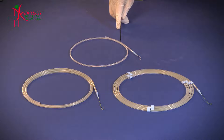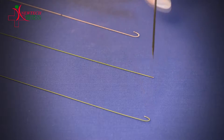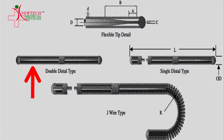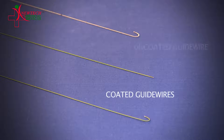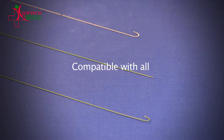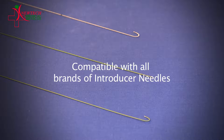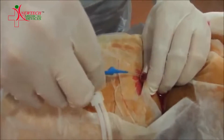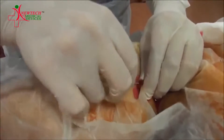The diameter of the guide wire can vary from 0.018 inches to 0.038 inches. This is a dialysis guide wire with a J-tip. We can also provide the same in straight tip, and in single and double distal form. A single distal guide wire is stiff at one end and flexible at the other, while a double distal is flexible at both ends. Though we offer coated and uncoated guide wires, an uncoated guide wire is usually used during the hemodialysis process. Our guide wires are compatible with all introducer needles available in the market.